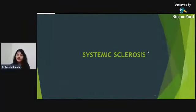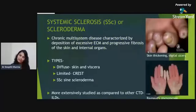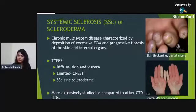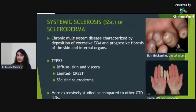Now we will discuss individual diseases. Systemic sclerosis, also called scleroderma, is a chronic multi-system disease characterized by excessive extracellular matrix deposition and progressive fibrosis of skin and internal organs. It is broadly divided into three categories: diffuse (both skin and viscera involved), limited disease or CREST syndrome (calcinosis, Raynaud's phenomenon, esophageal dysmotility, sclerodactyly, telangiectasia), and systemic sclerosis sine scleroderma (lung and visceral involvement without skin involvement).